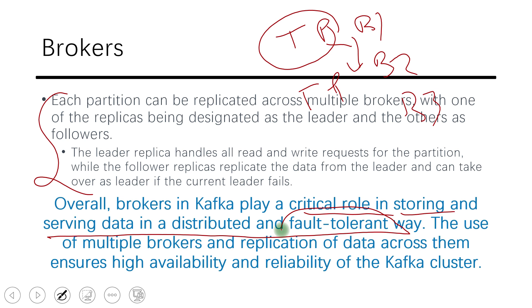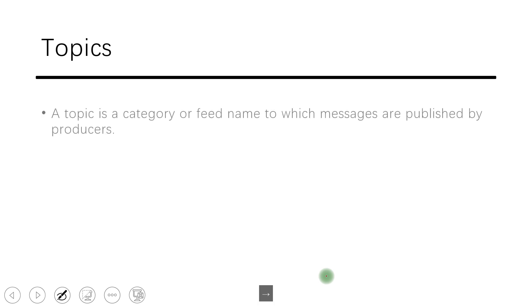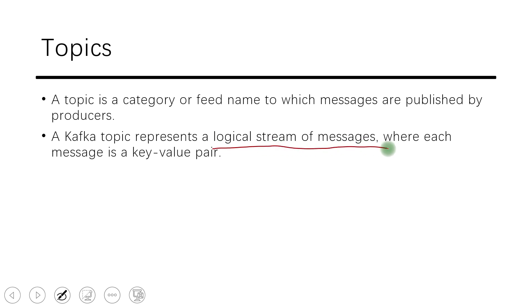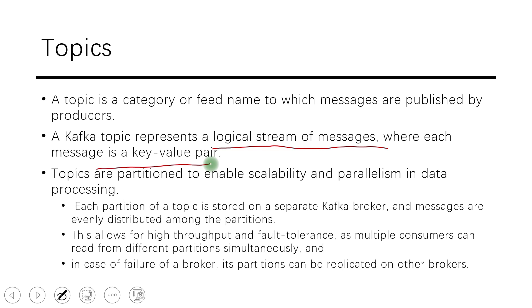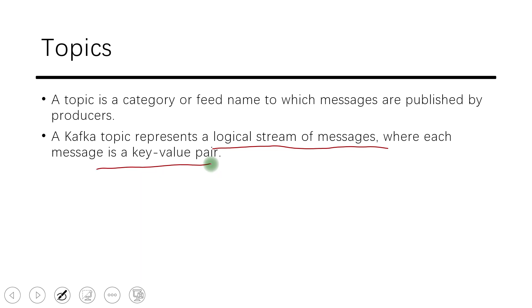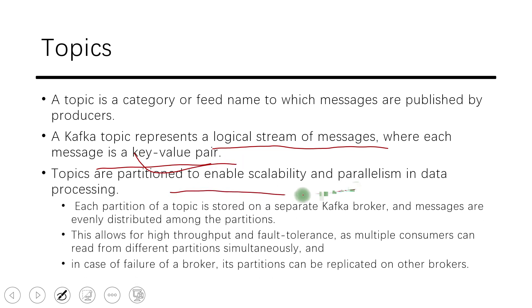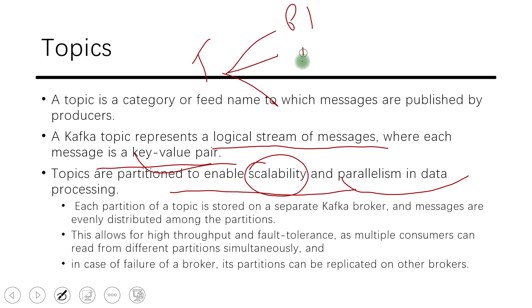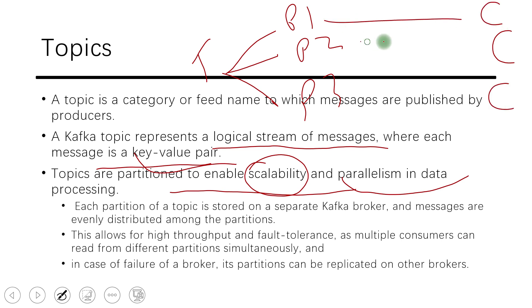In short, a broker plays a critical role in storing and serving data in a distributed and fault-tolerant way — those are the keywords to remember. Now, coming to topics: a topic is a logical category representing a logical stream of messages where each message is a key-value pair. Topics are partitioned to enable scalability and parallelism. If a topic has partitions P1, P2, and P3, up to three consumers can listen in parallel — one per partition.